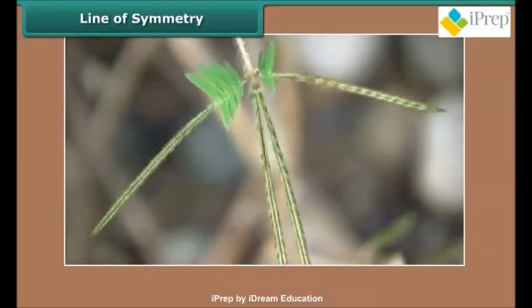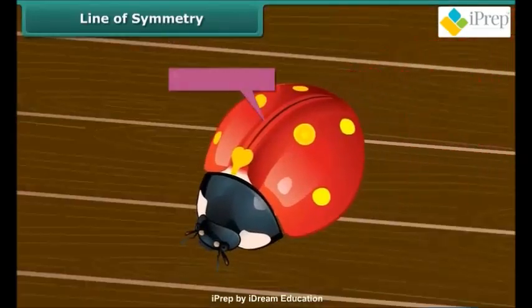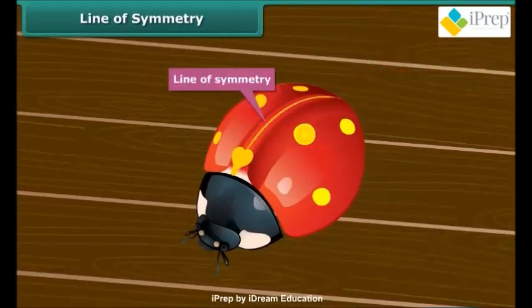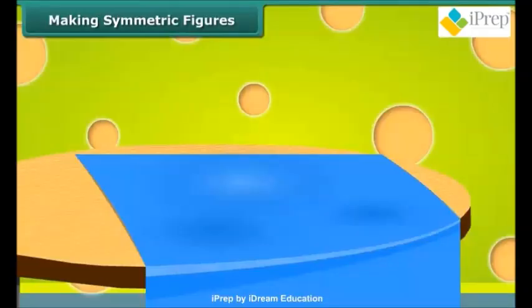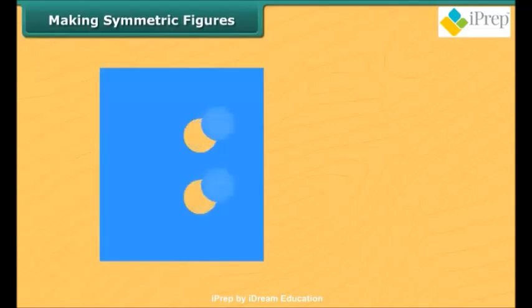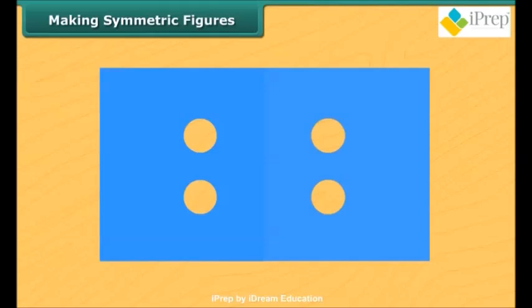Look at the touch-me-not plant's leaves — when you touch it, it folds in halves. You can see the two halves matching each other. This particular line created by the folding of the leaves is called the line of symmetry. This bug also has a line of symmetry along which it folds into two identical halves. If you take a piece of cloth, fold it in half, and cut two small circles from the middle, after unfolding you can see a symmetric pattern with a line of symmetry.